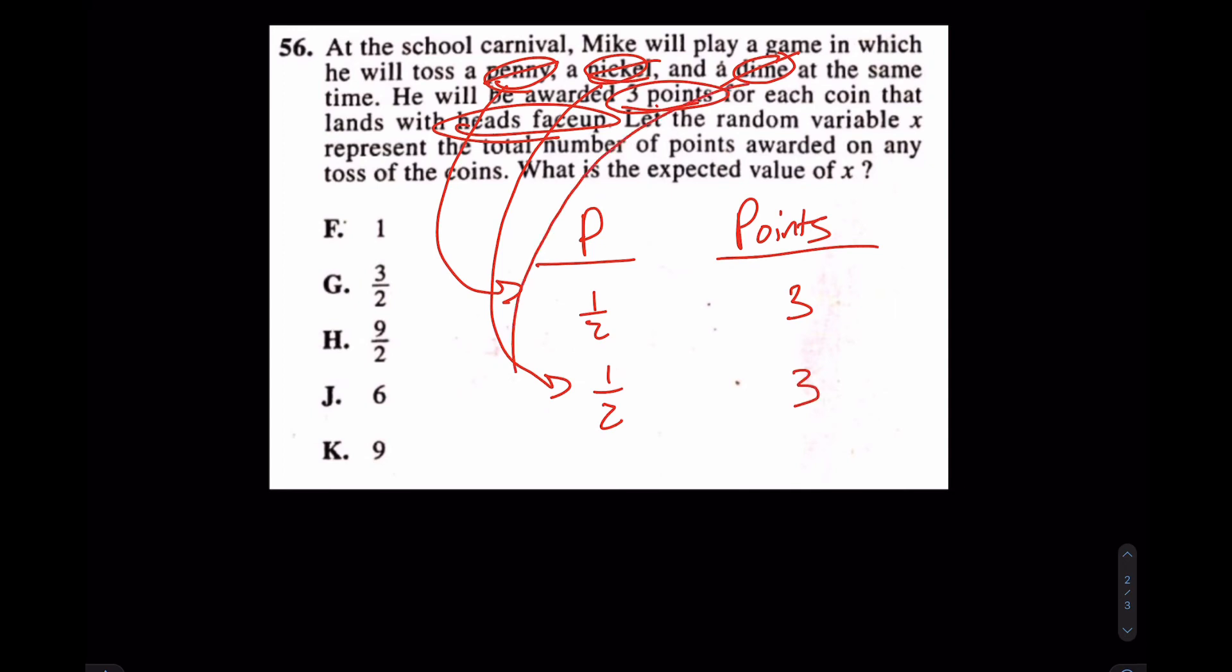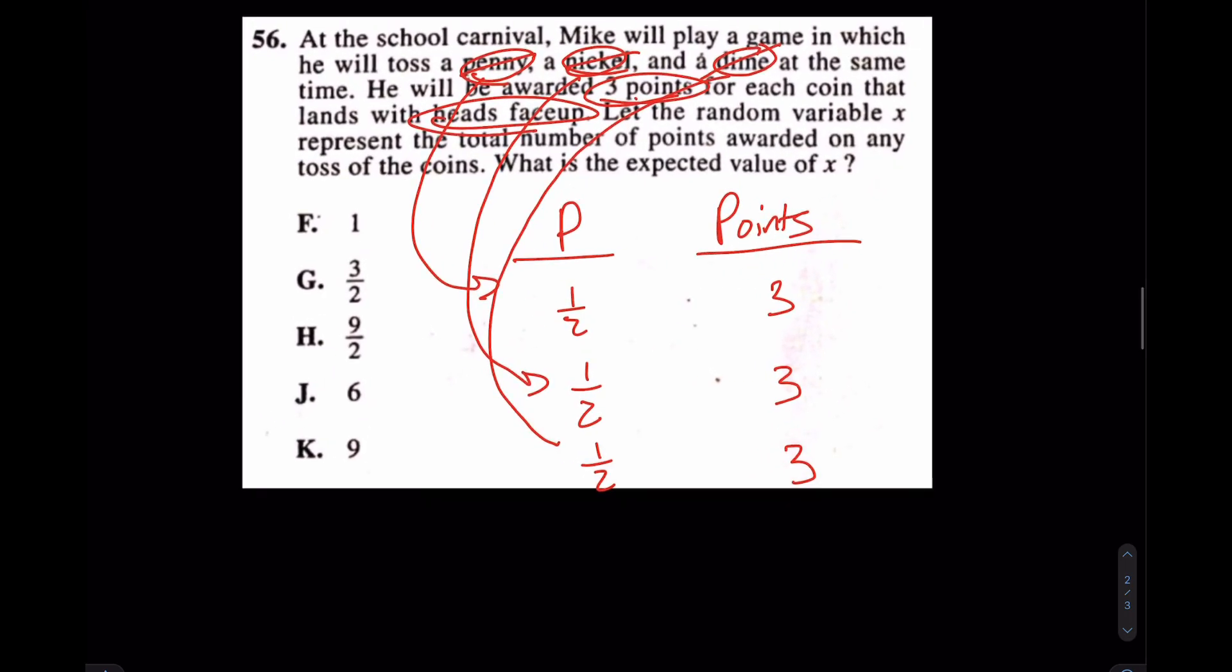And the last one, what about the dime? What's the probability for the dime heads up? Again, one half. And how many points there? Three. At the end of the day, how do you find expected value, boys and girls? You multiply these, and then add them down. Essentially, you multiply the probability times the points, and then sum them straight down. Of course, this will be three over two, three over two, three over two, when you multiply them.